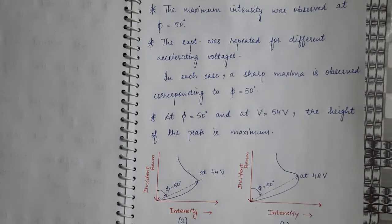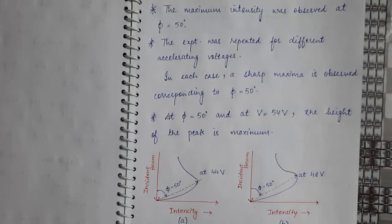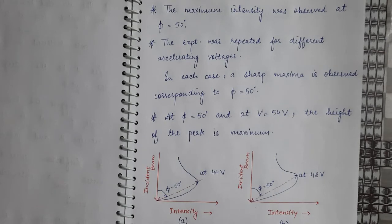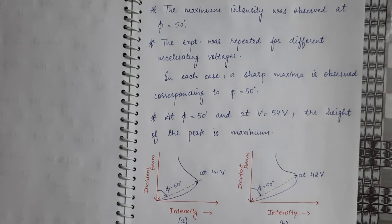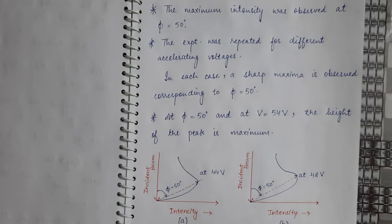First, they studied the intensity of the scattered electron beam as a function of scattering angle at a constant potential, varying the scattering angles and measuring the intensity at different values. The intensity of the scattered beam was maximum at phi equal to 50 degrees. They then studied the entire experiment at this scattering angle of 50 degrees only.